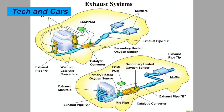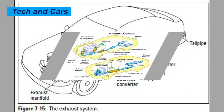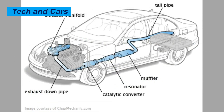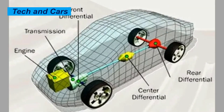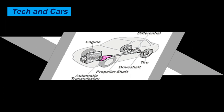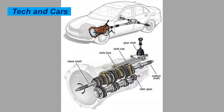4. Exhaust system problems. A clogged catalytic converter or clogged muffler can restrict the flow of exhaust gas, reducing engine power. 5. Transmission problems. A slipping clutch, worn out transmission, or low transmission fluid level can all cause loss of power when accelerating.